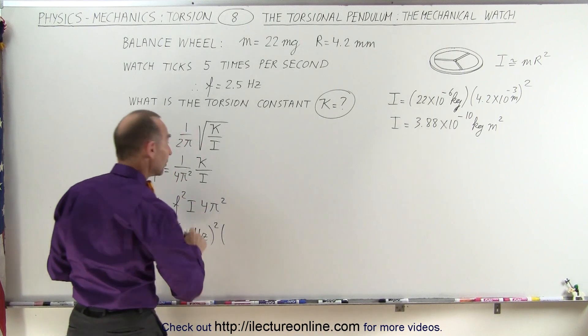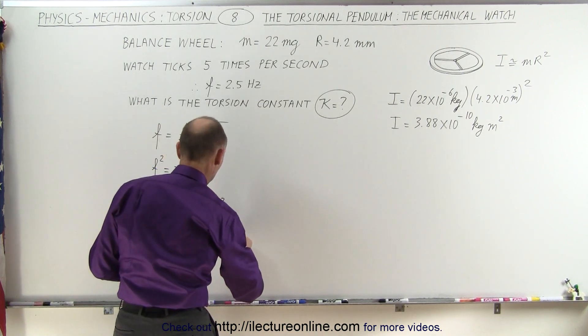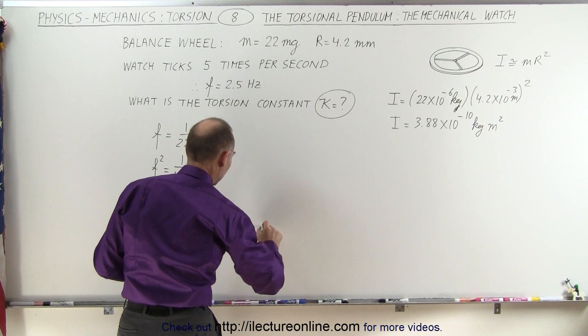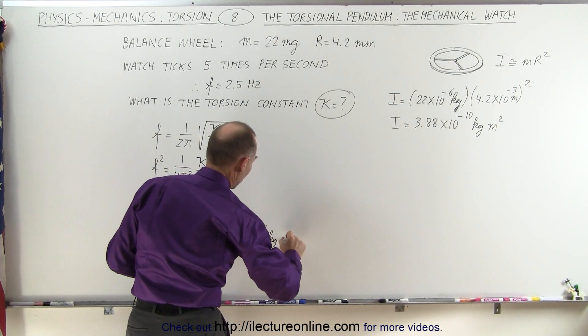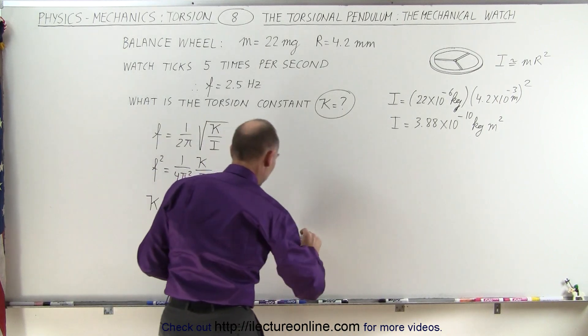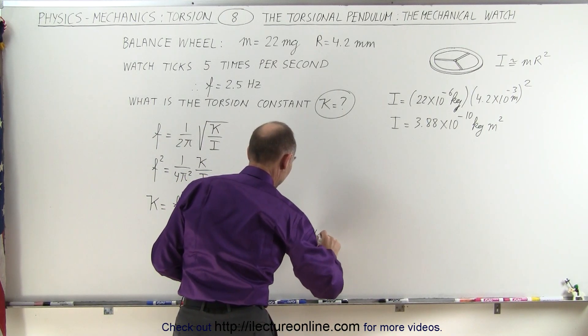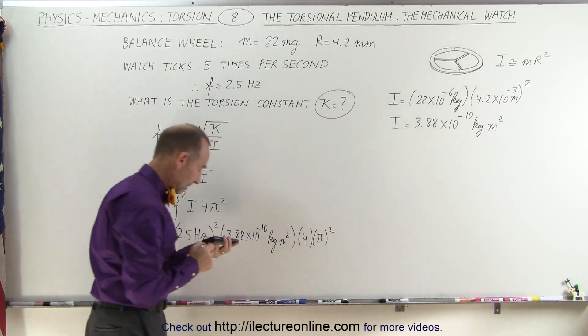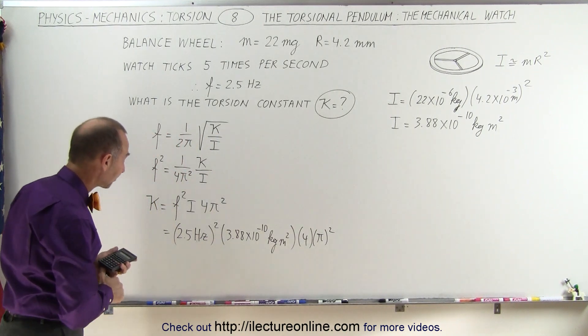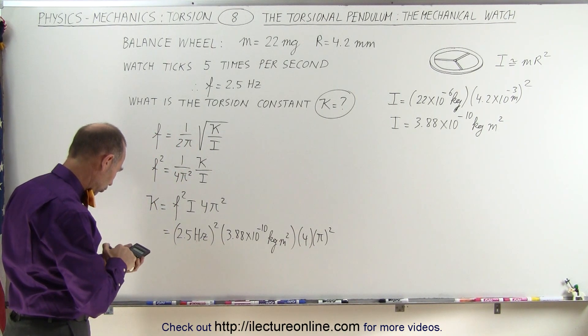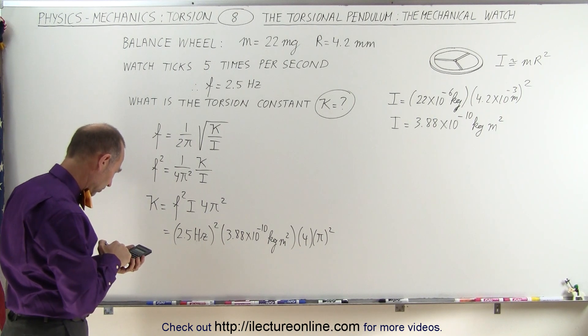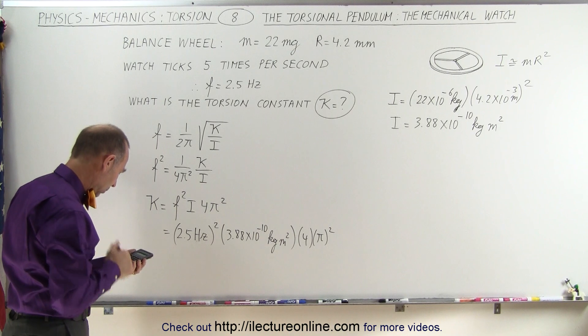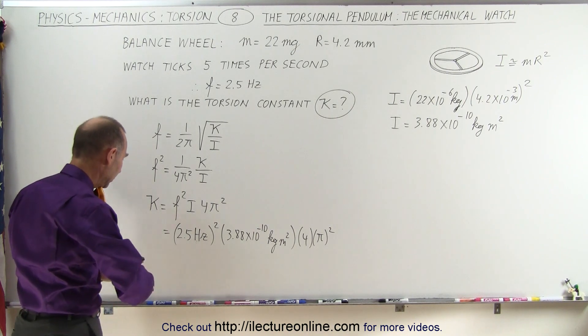Multiply that times the moment of inertia, which is 3.88 times 10 to the minus 10 kilograms meters squared, times 4 and times π². All right, let's see what we get. So 2.5 squared times 4 times π² equals, and the result is...